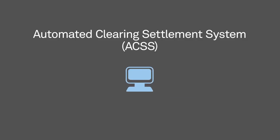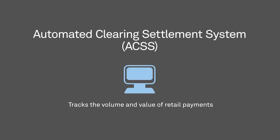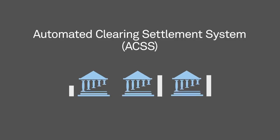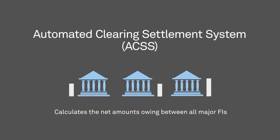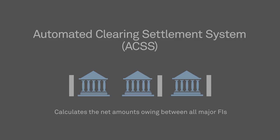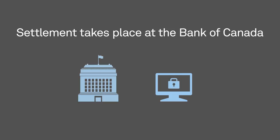Our automated clearing settlement system, the ACSS, tracks the volume and value of retail payments, including POS and online payments, that are exchanged between Canadian member FIs each business day. The ACSS also calculates the net amounts owing between all the major financial institutions at the end of each business day and their net position overall. This is done in preparation for settlement at the Bank of Canada, which involves payments made via the CPA's large value transfer system, the LVTS.